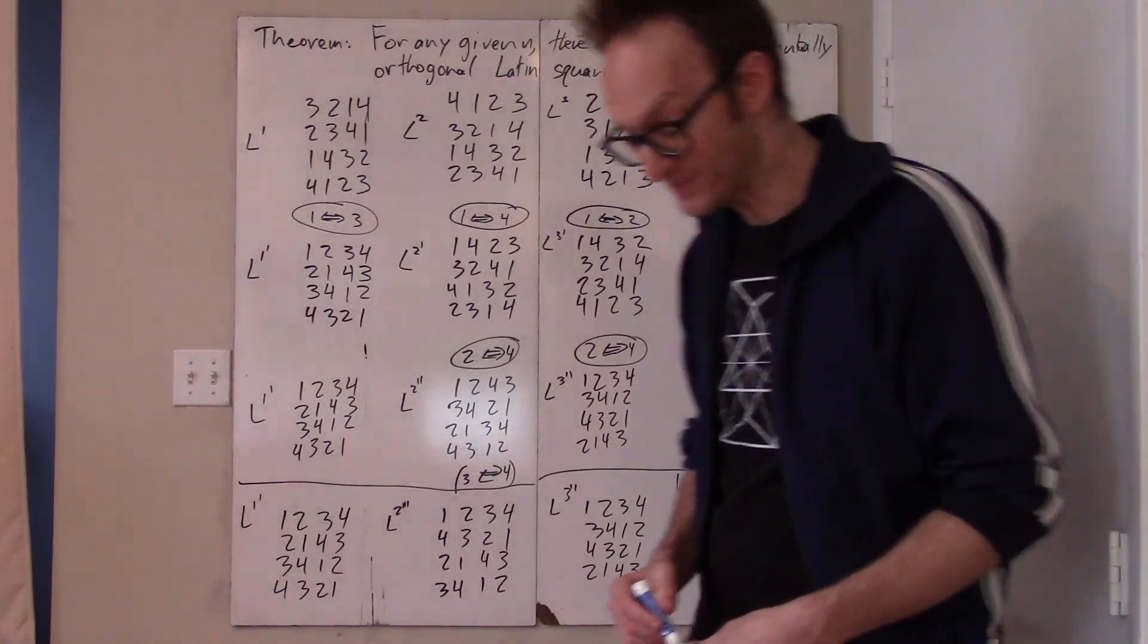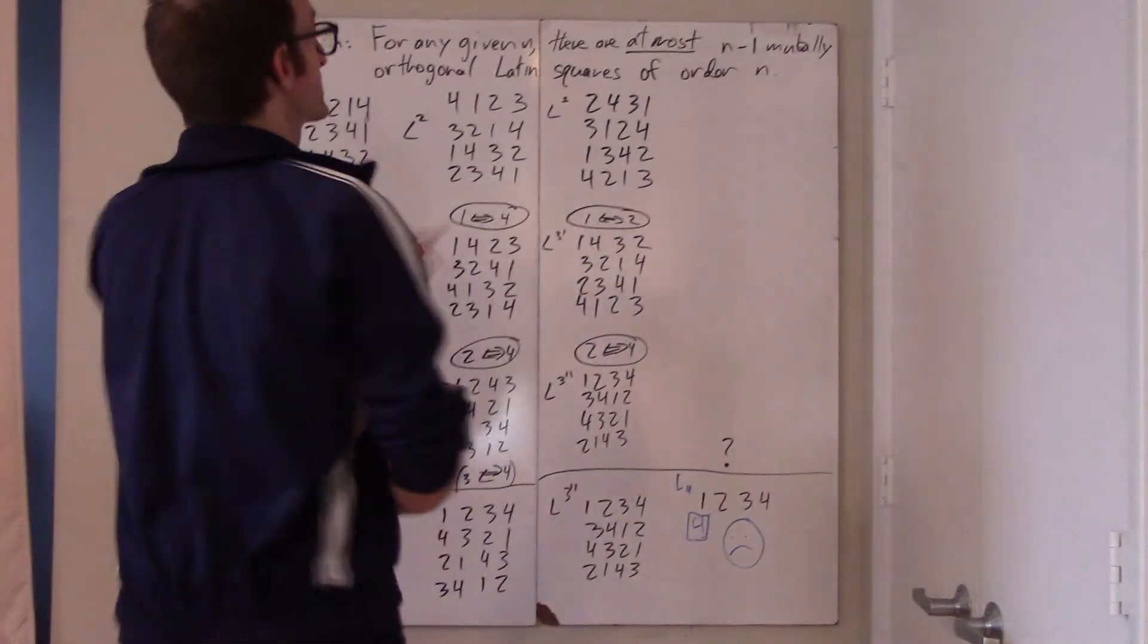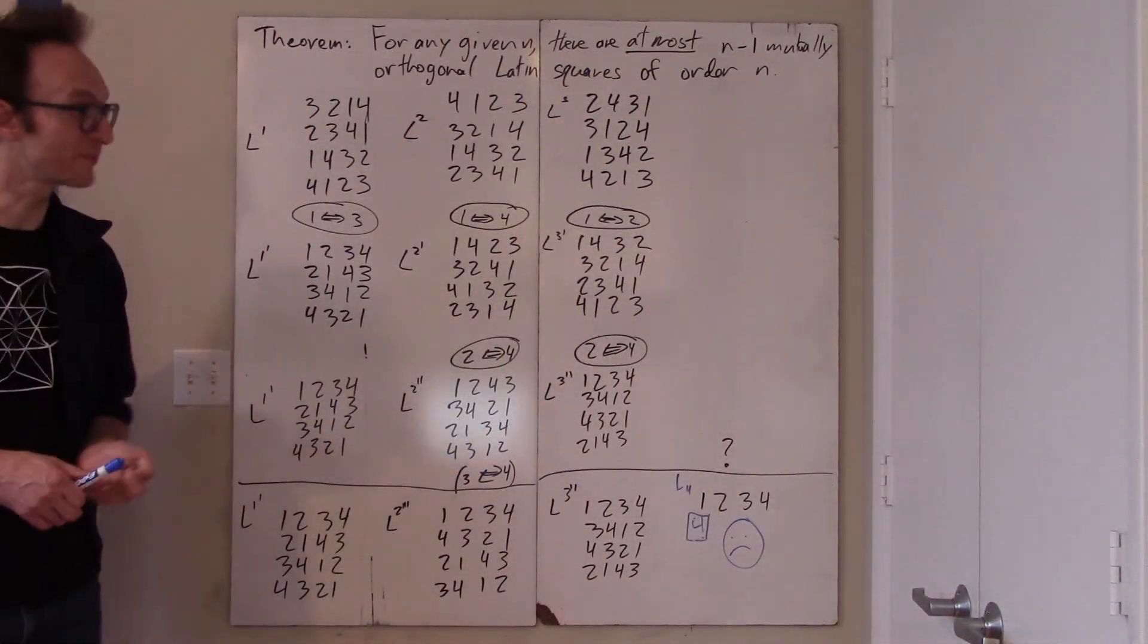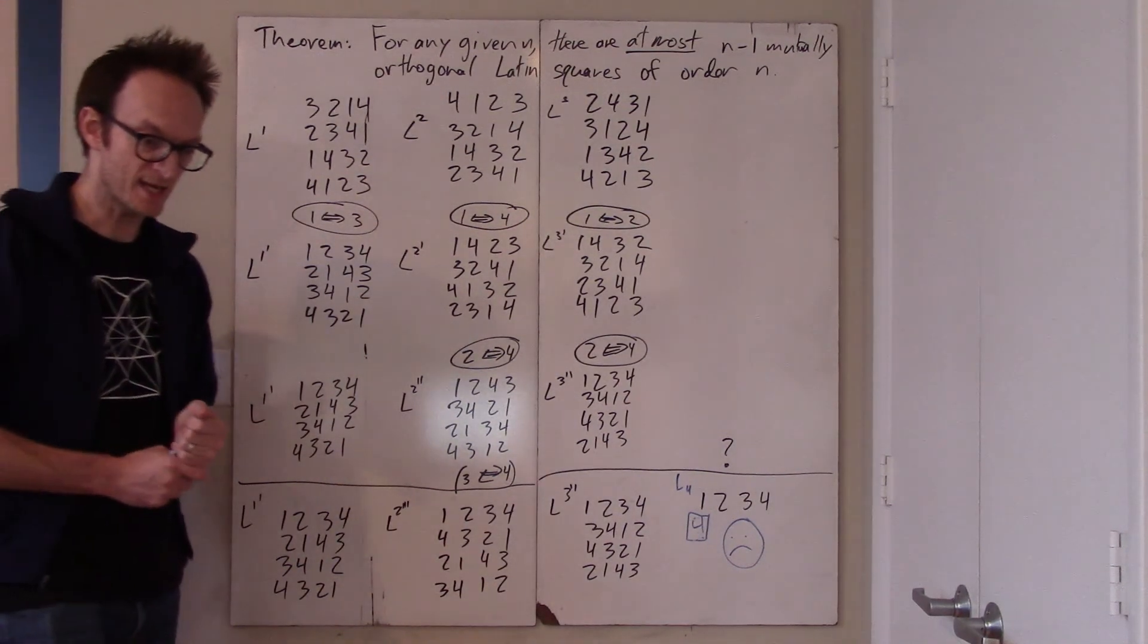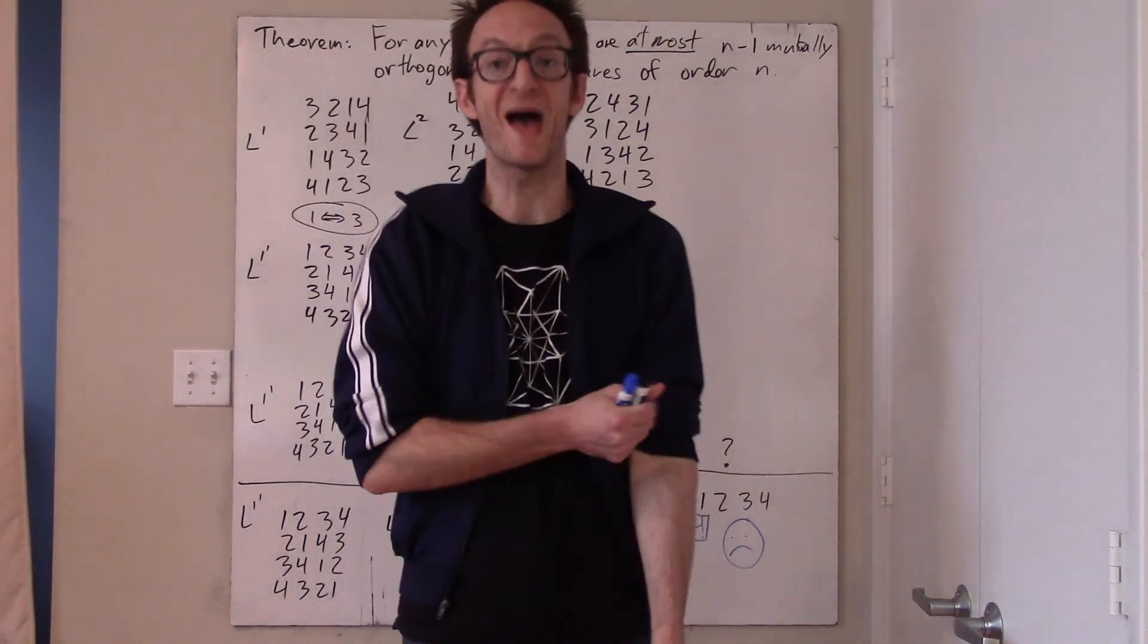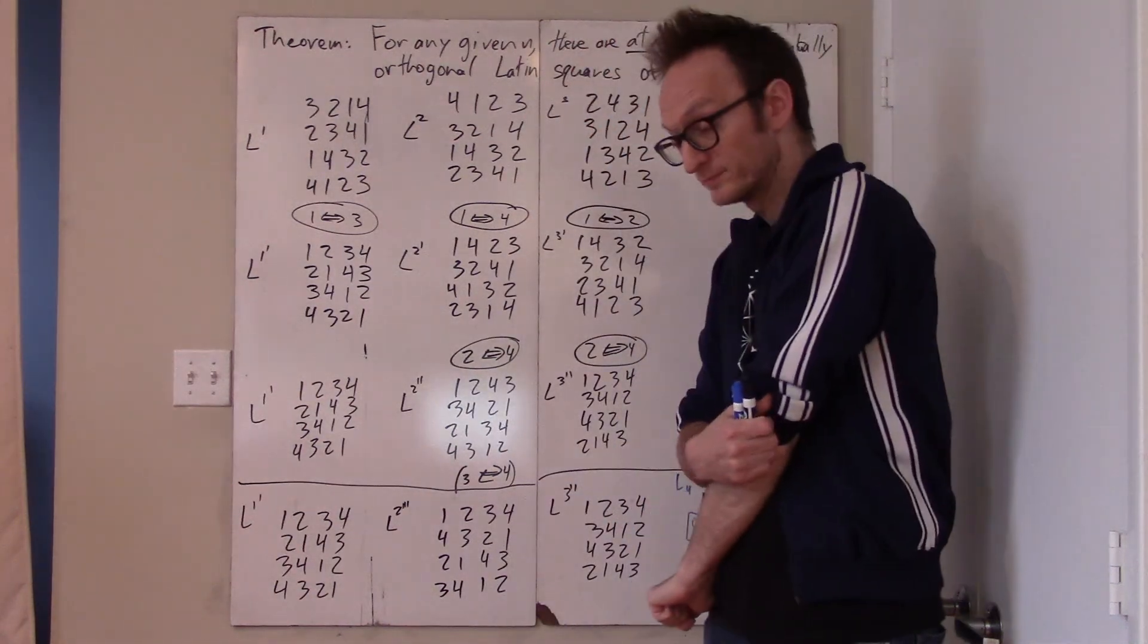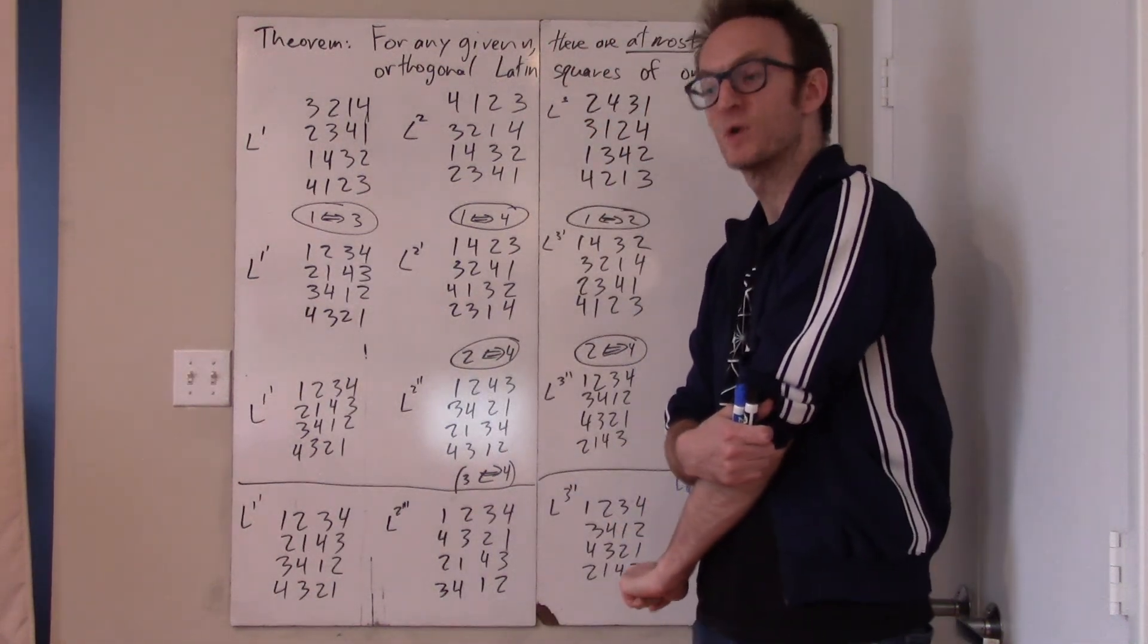And that is why you can have at most n minus 1 mutually orthogonal Latin squares of order n. And okay, so now some facts. Maybe I'll actually leave it at that. Okay, goodbye.